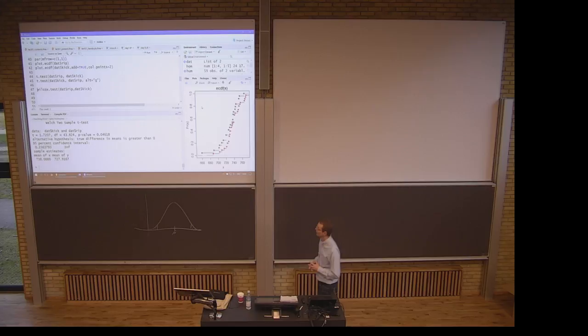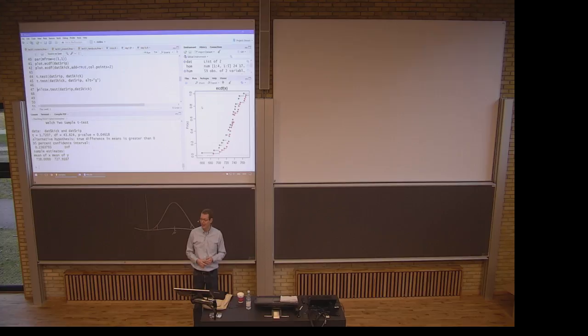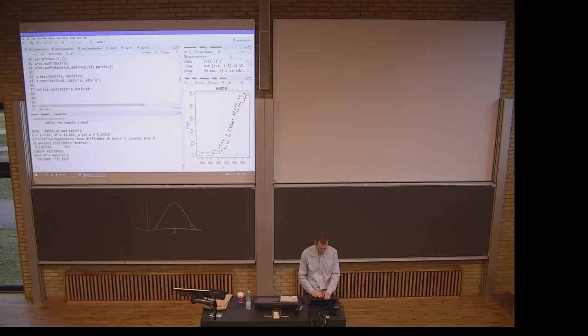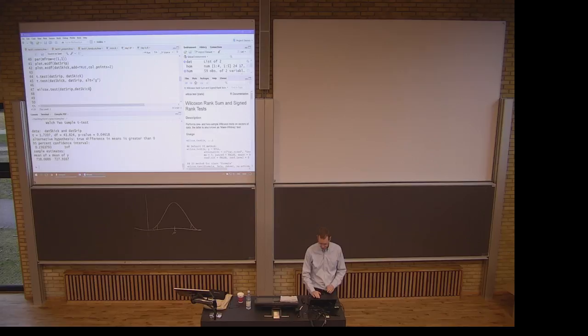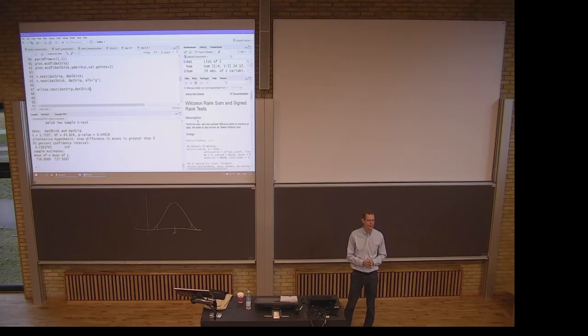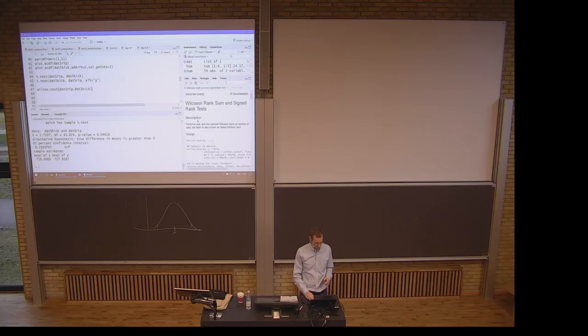An alternative is what I call the Wilcoxon rank sum test. And the name itself pretty much explains what it's doing. So, rank sum test. What does that mean? You take the sum of the rank. And the ranking means basically, you sort all the observations. And then you keep track of whom belong to which group. So, how do we do that?